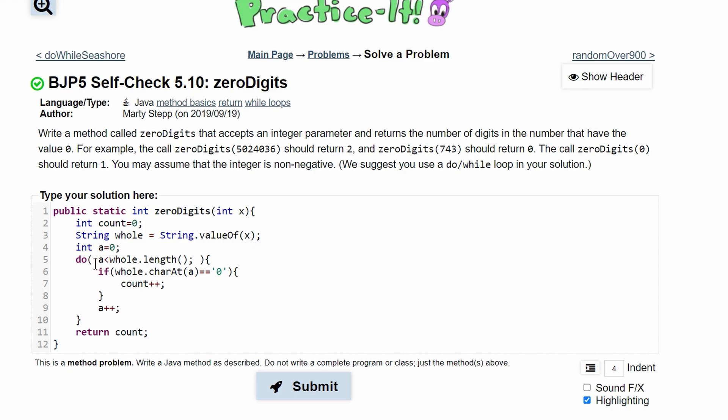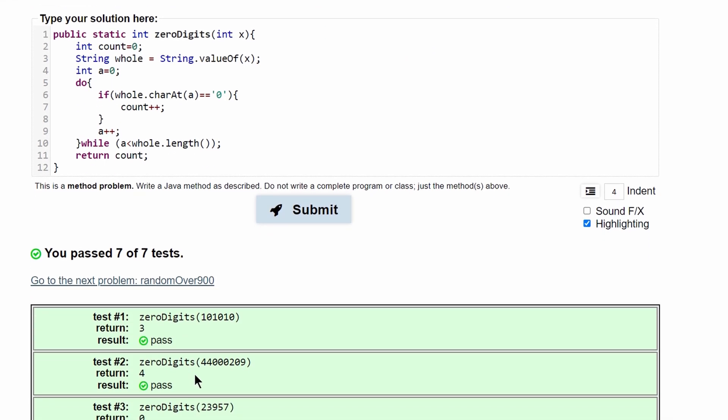Lastly, we are going to take these parentheses, cut them, put while right here and paste this down here, and move that semicolon to the outside. We can submit this and see that we still pass the test.